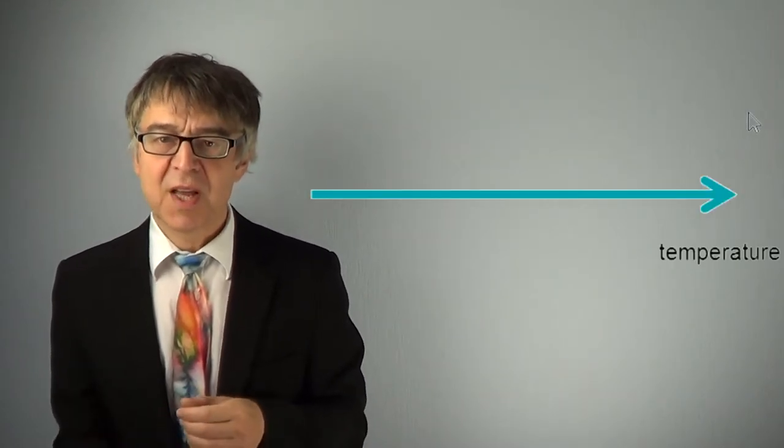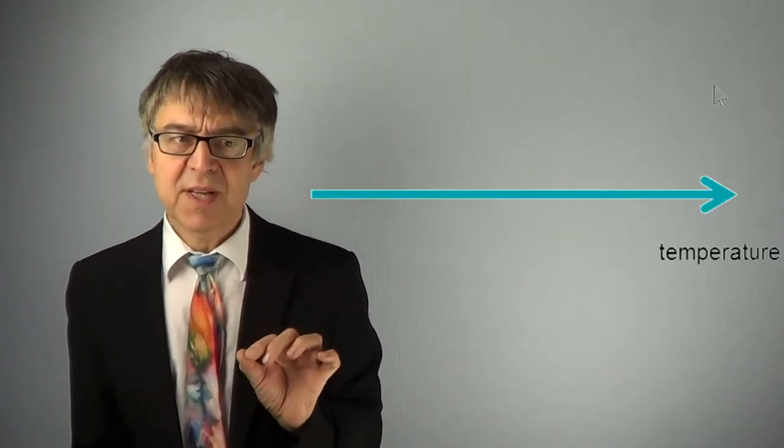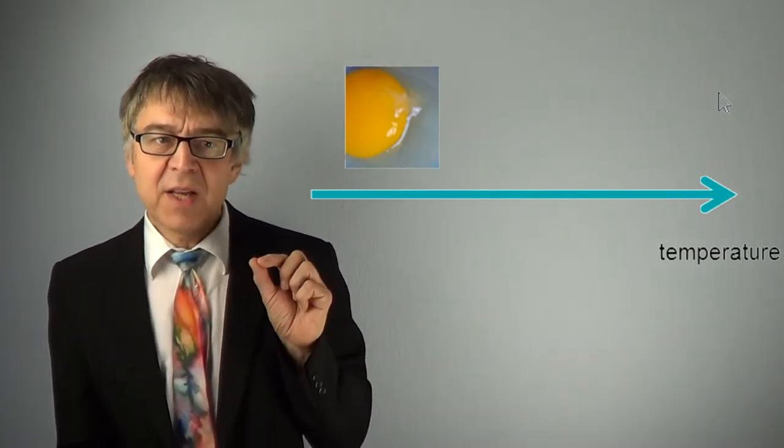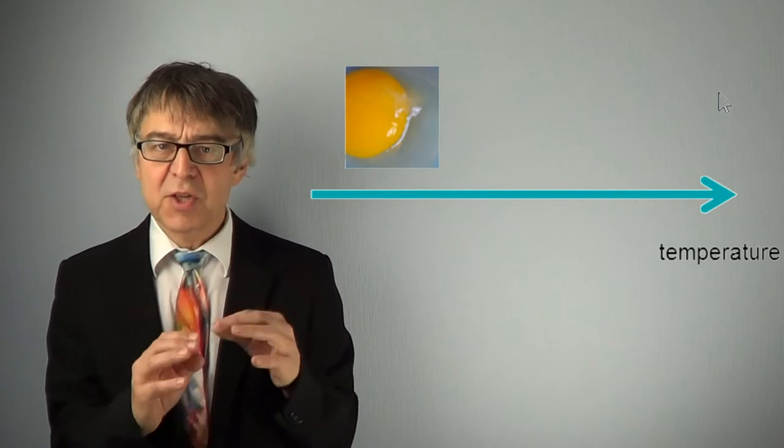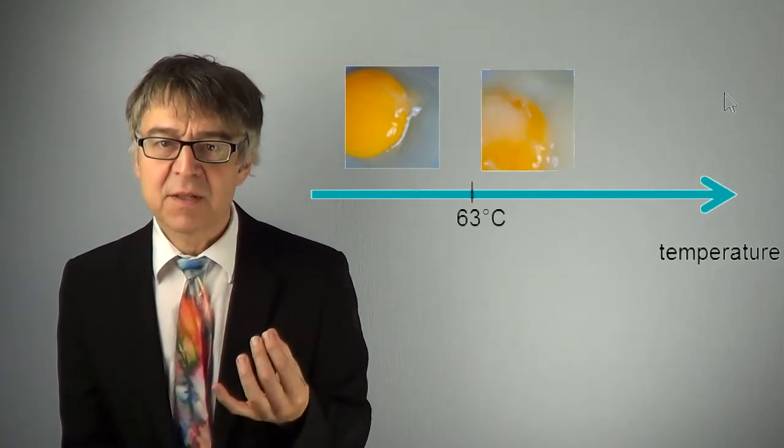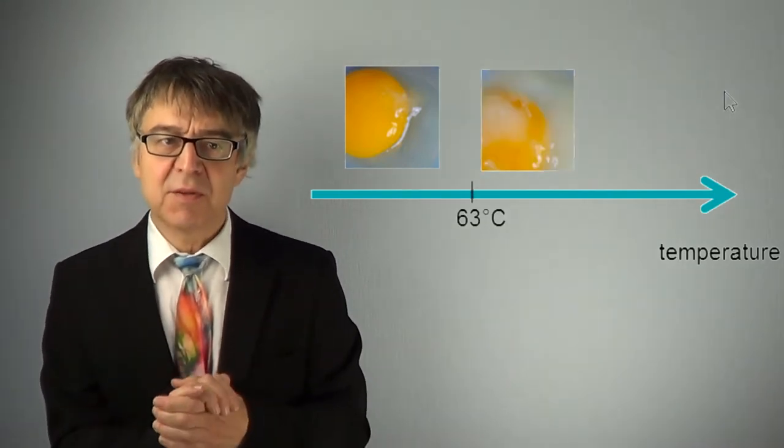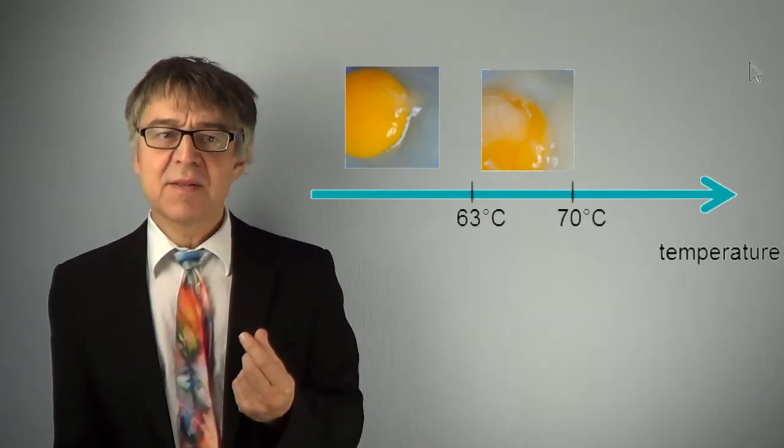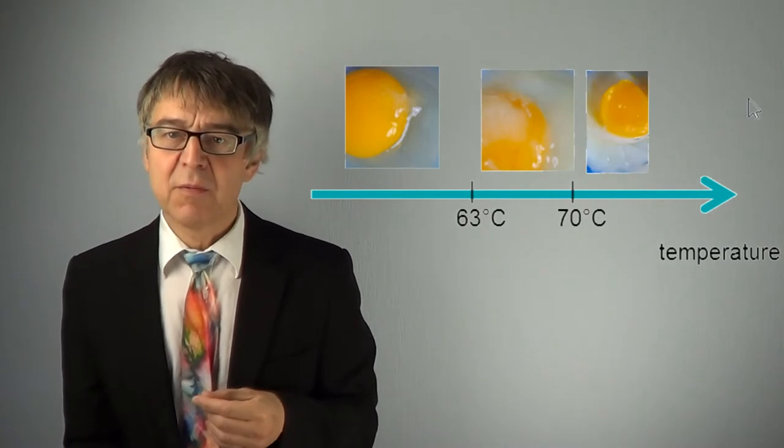These proteins have very specific transformation temperatures. At 63 degrees Celsius, ovotransferrin in the egg white unfolds, that is, it turns solid. At 70 degrees, the yolk proteins unfold. At 80 degrees Celsius, the ovalbumin of the egg white unfolds.